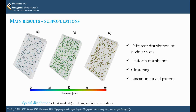The results of the subpopulation analysis show different distributions of nodular sizes, which were grouped into three subpopulations, as can be observed here. In all cases, a uniform nodular distribution is observed, along with clustering and zones with nodules following some patterns.